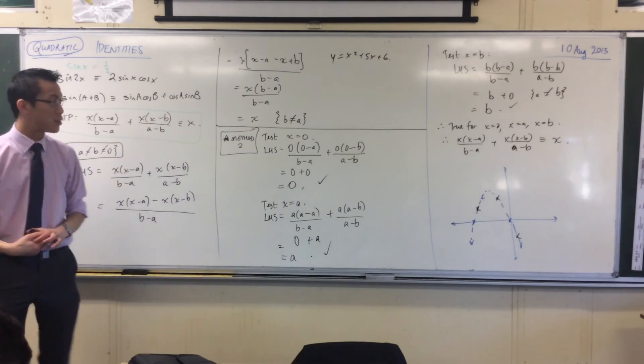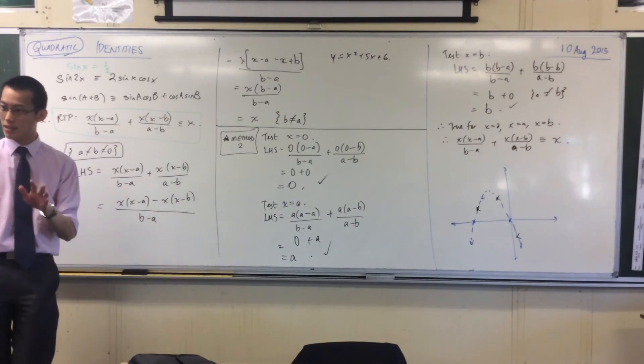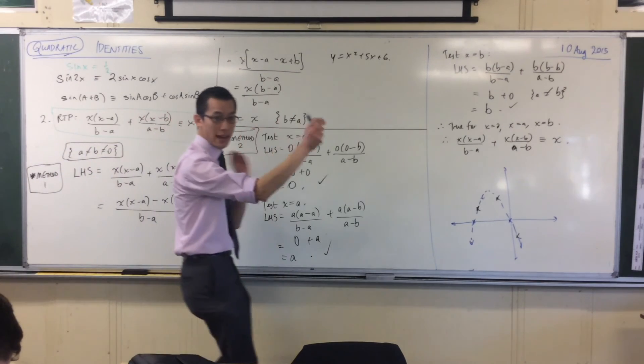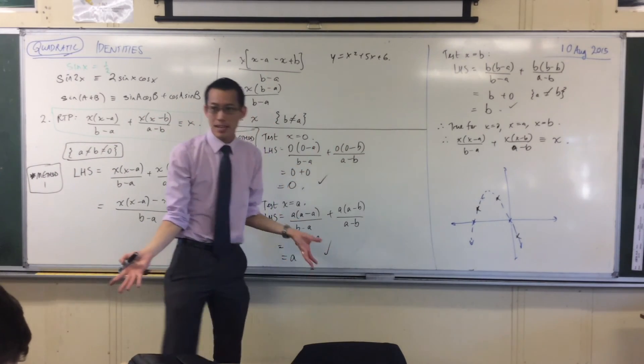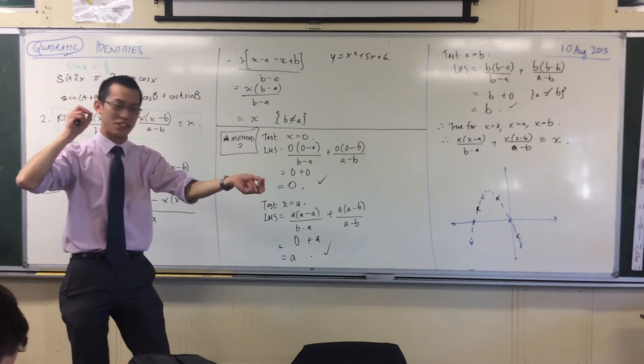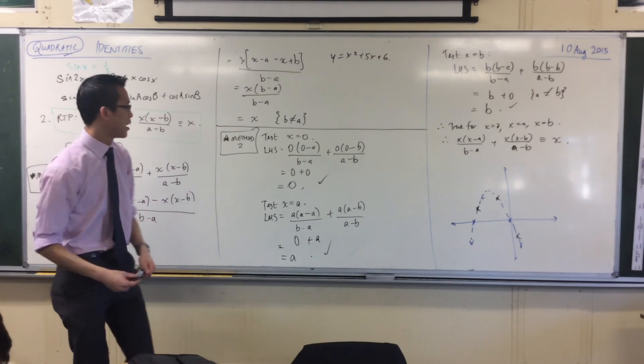In exactly the same way that if I had two straight lines, even if they were written in different ways, if I put in two values and they both line up, it must be the same line. What other line could you be imagining? It has to be identical.